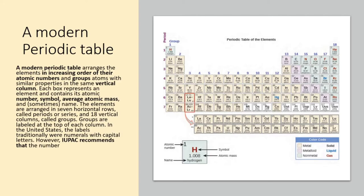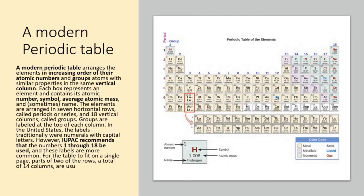Groups are labeled at the top of each column. In the United States, the labels traditionally were numerals with capital letters. However, IUPAC recommends that the numbers 1 through 18 be used, and these labels are more common. For the table to fit on a single page, parts of two of the rows, a total of 14 columns, are usually written below the main body of the table.